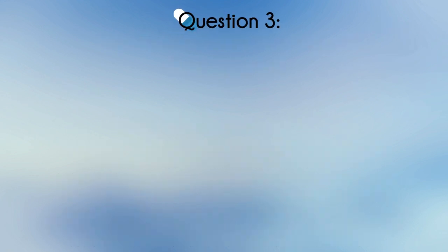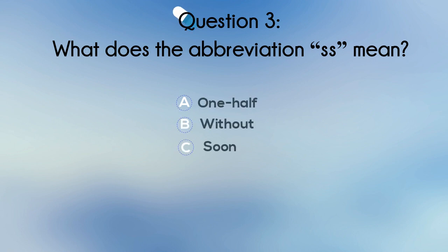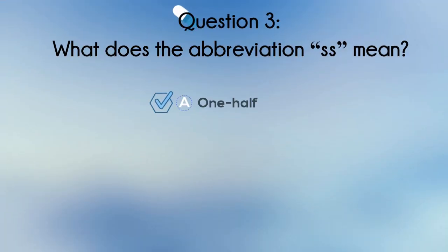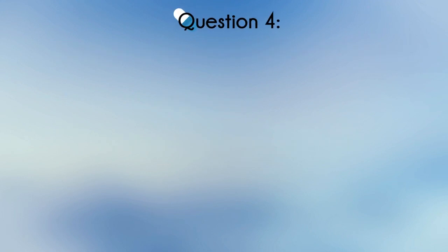Question 3. What does the abbreviation 'ss' mean? A. One half. B. Without. C. Soon. D. Suppository. The correct answer is A: one half. This comes from the Latin 'semis,' which means one half.